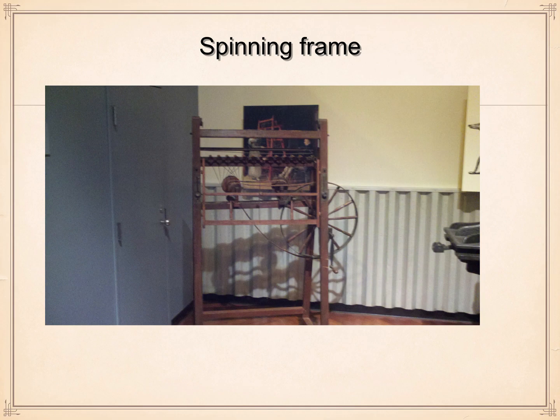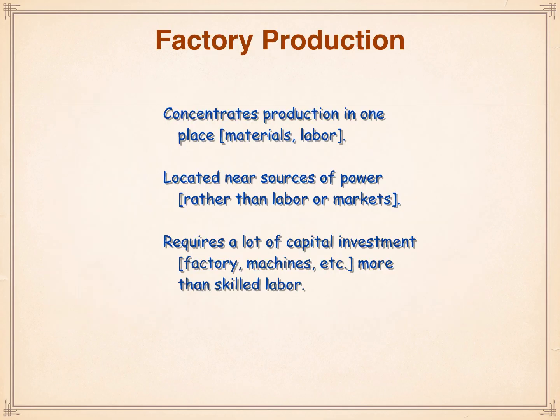Always look at this from the point of view of the businessman, the merchant, the entrepreneur of the time. Some factory production concerns: factory systems concentrate production in one place — everything under one roof, and that's good. It has to be located near a source of power, though with steam that doesn't have to be water — you just want it close to a railroad track, someplace where you can get coal. The big drawback is that it requires a lot of capital investment.